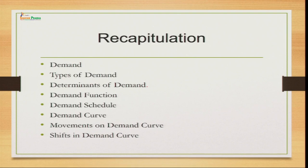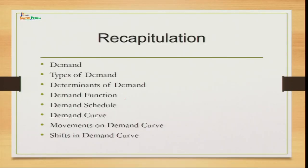We also talked about the determinants of demand — the factors which affect demand of a commodity. Some determinants have a positive relationship on demand whereas some have an inverse relationship. The most prominent determinant affecting demand of any commodity is price, and it is inversely proportionate to demand. We also discussed demand function — the mathematical relationship between demand and its determinants — and demand schedule, a tabular representation showing how change in prices causes change in quantity demanded. Demand curve is the graphical representation, always downward sloping, showing an inverse relationship between price and demand, and can be linear or non-linear.